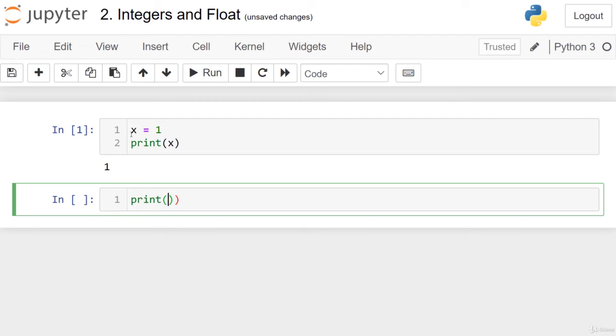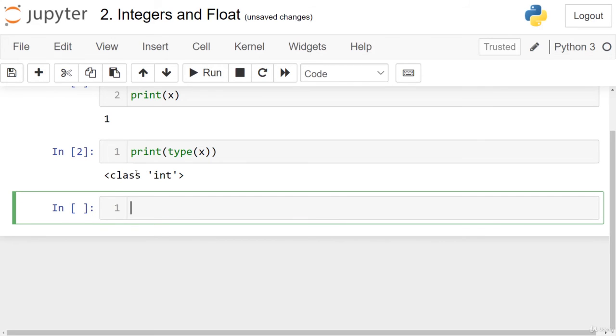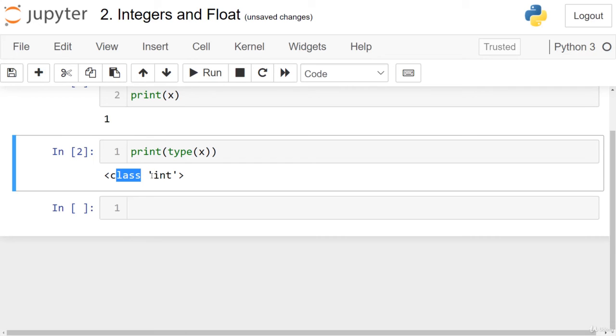Now, if we print the output of the type function, we will have class int. We will have complete sections on classes, but for now, you need to know that here we are treating it as a data type. So it says that the data type here is integer.